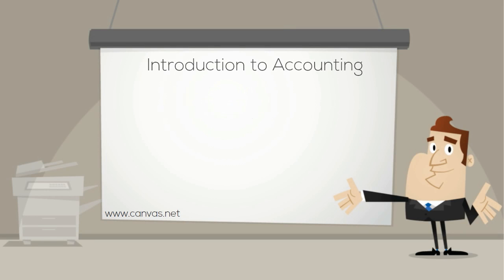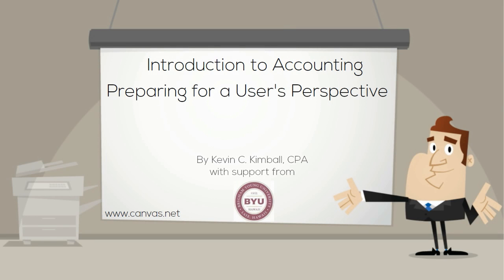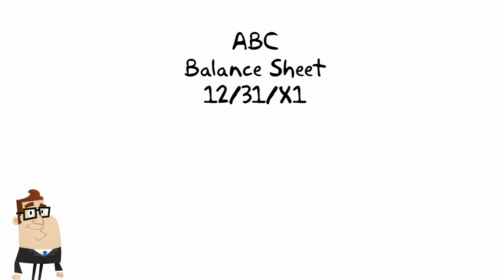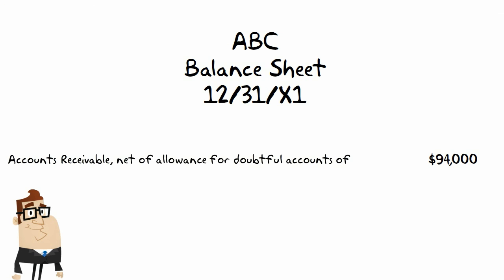Welcome to Introduction to Accounting, Preparing for a User's Perspective. Allowance for Doubtful Accounts. Imagine you are reviewing a company's balance sheet and you see the following $94,000 asset: Accounts receivable, net of allowance for doubtful accounts of $2,000, equals $94,000.